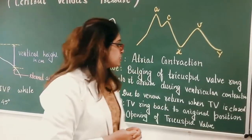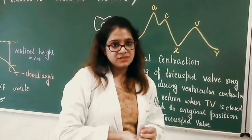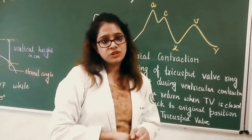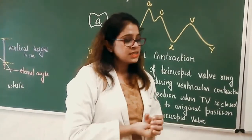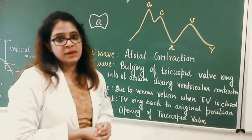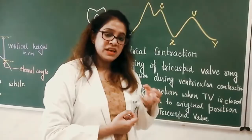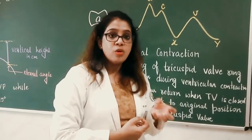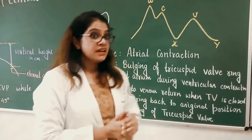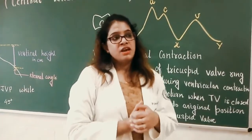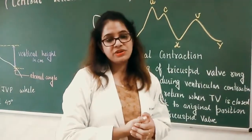The a wave is absent in atrial fibrillation, since the contraction is not forceful. In conditions like pulmonary hypertension or tricuspid stenosis, the right atrium contracts more forcefully, producing giant a waves. Cannon a waves are very large waves produced when the right atrium contracts against a closed tricuspid valve.